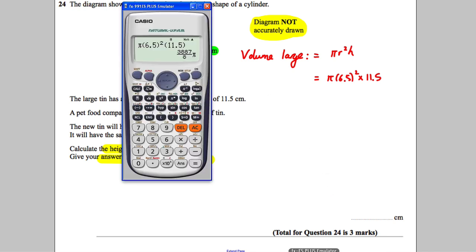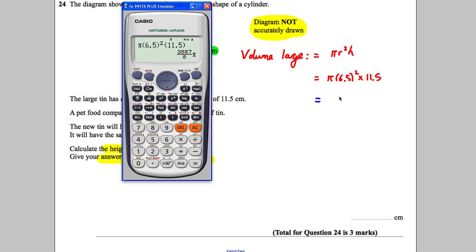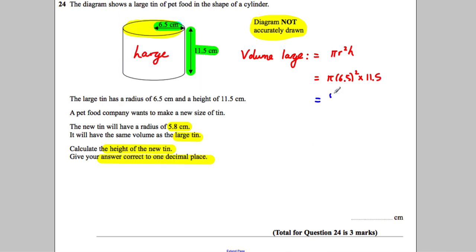So I'm going to leave it as 3887 over 8 π and not round just yet, just to save me the hassle later of decimalizing it. I'm just going to leave it like that for now.